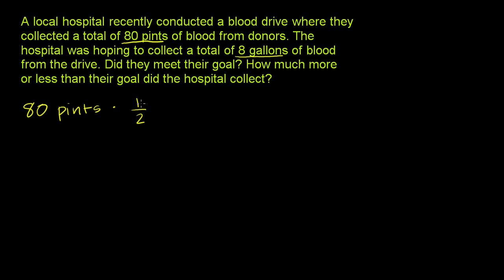We'll make sure the units work out. We have 1 quart for every 2 pints, or 2 pints per quart, or 1/2 of a quart per pint. Either way, the units work out. You're essentially taking 80 and dividing by 2, or multiplying by 1/2, and you get 40 quarts.